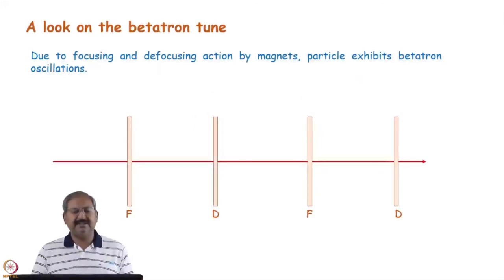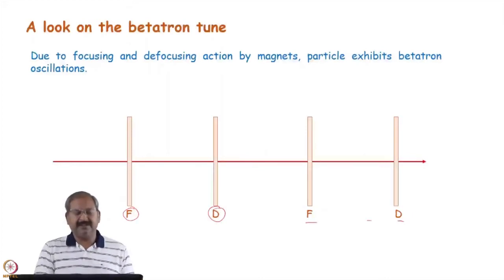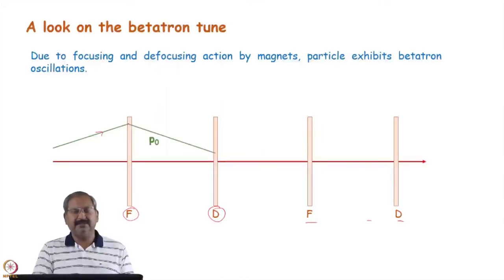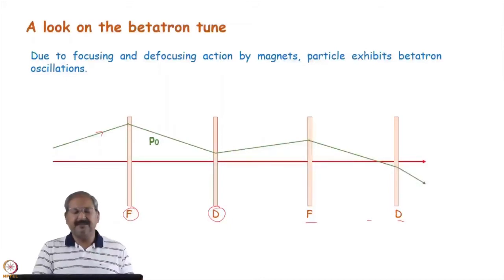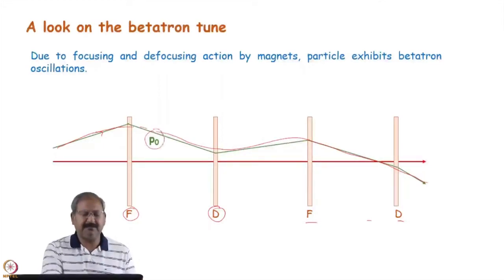We recap the betatron treatment. We have a simple optics in which a focusing quadrupole is followed by a defocusing quadrupole, and this is repeated. If a particle trajectory enters this optics, the focusing quadrupole sends it towards the design trajectory, then the defocusing sends it away, and so on. In this fashion, the particle exhibits betatron oscillations. These betatron oscillations are for the correct momentum particle — the on-momentum particle — with design momentum P0.